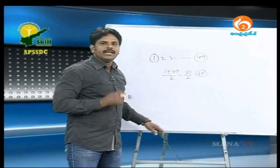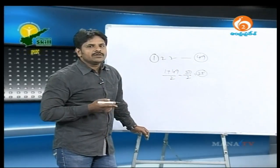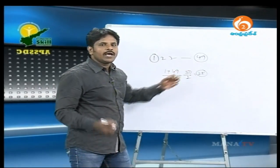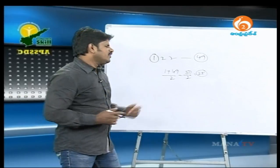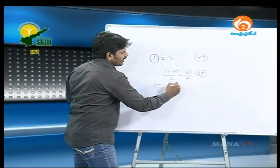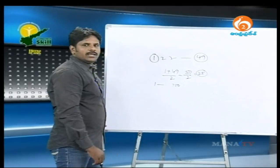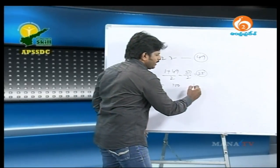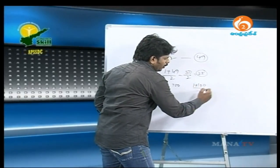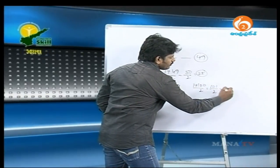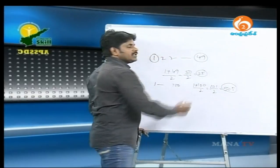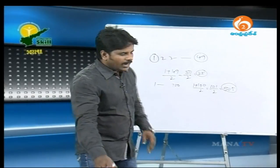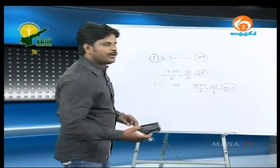For the first 100 natural numbers: 1 plus 100 upon 2 equals 101 by 2 equals 50.5. That is the average of the first 100 natural numbers. So the formula is: first number plus last number divided by 2 gives the average for consecutive numbers.